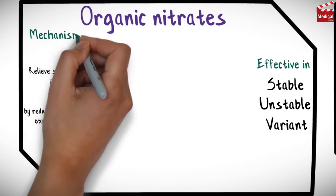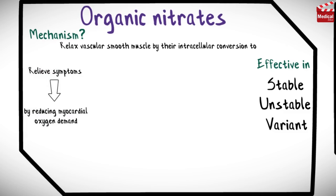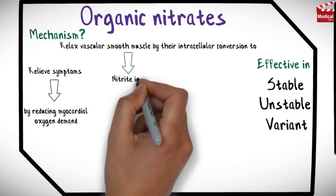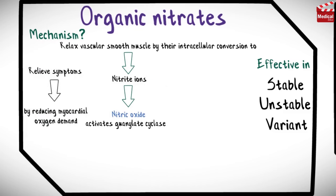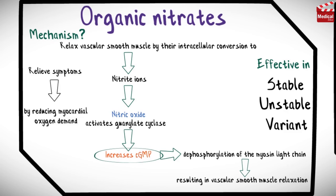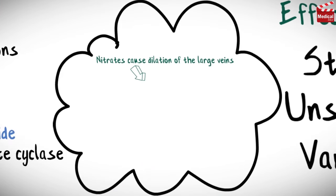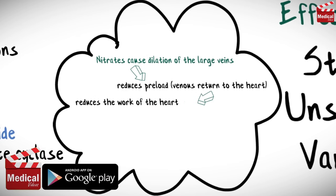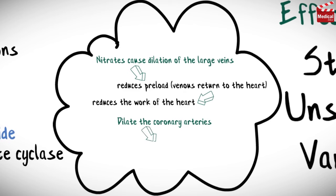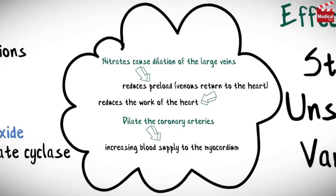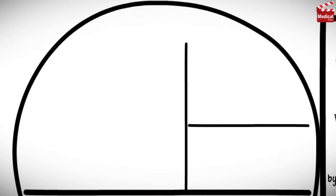Organic nitrates relax vascular smooth muscle through intracellular conversion to nitrite ions and then to nitric oxide, which activates guanylate cyclase and increases cyclic guanosine monophosphate (cGMP). Elevated cGMP causes phosphorylation of the myosin light chain, resulting in vascular smooth muscle relaxation. cGMP is then degraded and inactivated by phosphodiesterase type 5, terminating the action of nitric oxide. Nitrates cause dilation of large veins, reducing preload and venous return to the heart, and also dilate the coronary arteries, increasing blood supply to the myocardium.